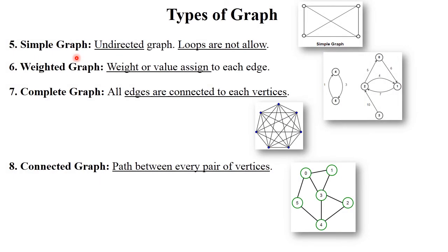The next type of graph is simple graph. Simple graph has two properties: it is undirected and loops are not allowed. All vertices are connected with each other and no loop is formed. Next is weighted graph — each edge has a particular weight or value assigned to it. Weighted graphs are mostly used in GPS or Google Maps, where distances in meters or kilometers are assigned as weights.